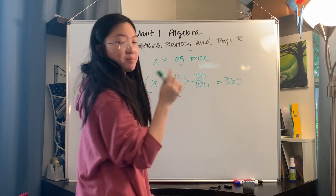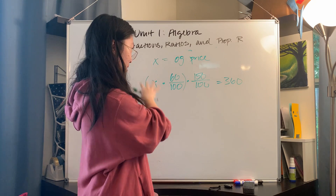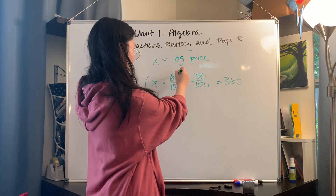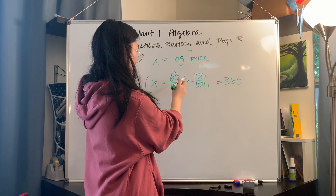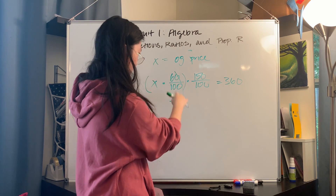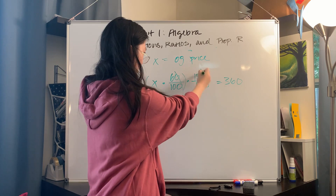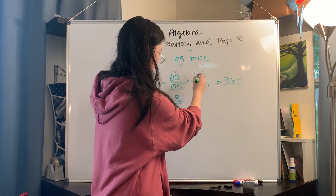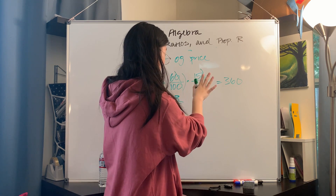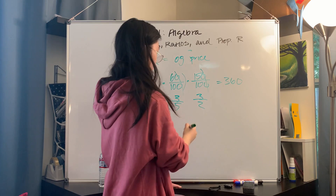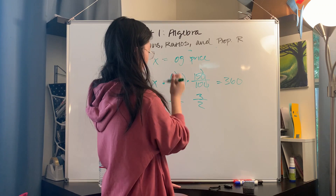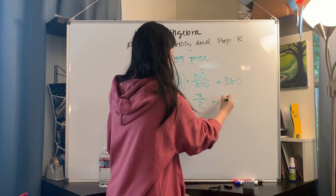One reason I like writing percents as fractions is because it's easier to simplify. So 60/100 becomes 6/10, then dividing by 2 gives 3/5. And 150/100 — dividing by 5 gives 3/2. So X times 3/5 times 3/2 equals 360, which simplifies to 9/10 times X equals 360.